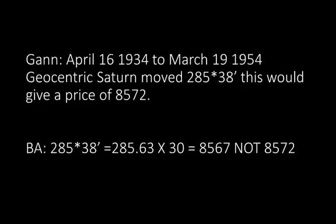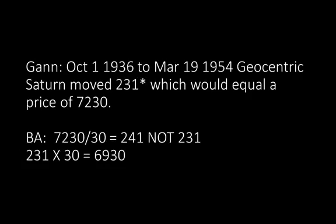Gann, April 16, 1934 to April 19, 1954 — geocentric Saturn moved 285 degrees, 38 minutes. This would give a price of 8,572. BA: 285 degrees 38 minutes equals 285.63. What we've done there is gotten the zodiac equivalent and the decimal equivalent. So it's 285.63 times 30 equals 8,567, not 8,572. He's close on there, and there's a reason why he's off by 5, but we're not going to get into that right now.